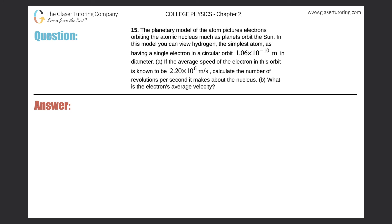Number 15. The planetary model of the atom pictures electrons orbiting the atomic nucleus much as planets orbit the sun. In this model you can view hydrogen, the simplest atom, as having a single electron in a circular orbit 1.06 times 10 to the minus 10 meters in diameter. If the average speed of the electron in this orbit is known to be 2.2 times 10 to the sixth meters per second, calculate the number of revolutions per second it makes about the nucleus.